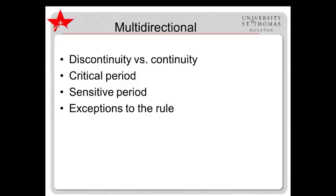Both growth and decline occur throughout one's lifetime. At various points, certain changes must occur for development to continue on its typical course—these points are called critical periods. At other points, changes are most likely to occur, though they can occur at other times; such optimal points are called sensitive periods. Taking a multi-directional view requires acknowledging that development can occur outside of typical timeframes. There are always exceptions to the rules.